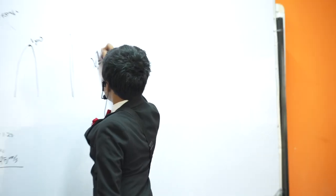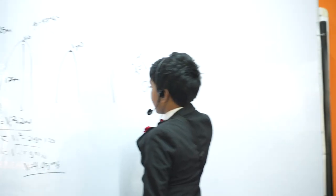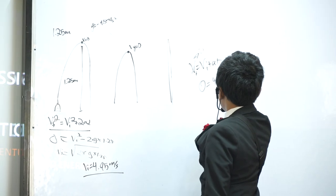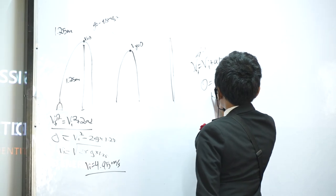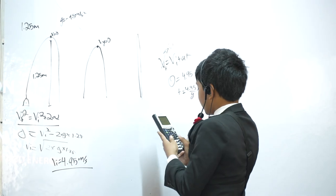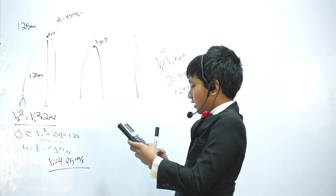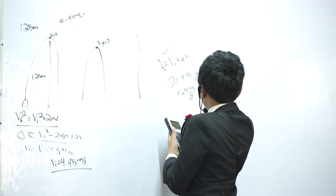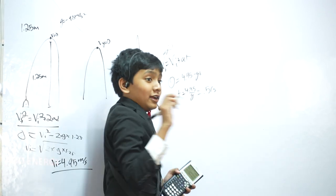Okay, so the VF we know is 0, the VI is that 4.95 number, A is G, so T is 4.95 over G. Good, you guys did good this time. Okay, 0.51 seconds. Alright, alright.